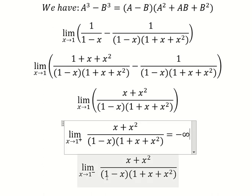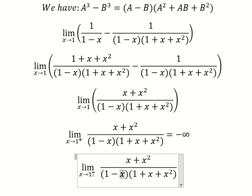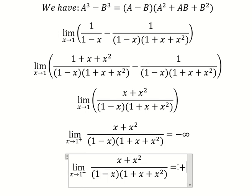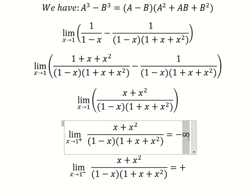On the left of number one, the value of x is smaller than number one. One minus a number smaller than one gives a positive number. So positive divided by positive we have positive, but we need to divide by number zero, so we have positive infinity.